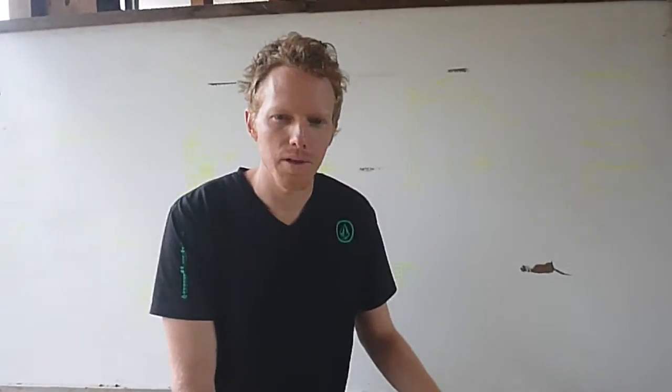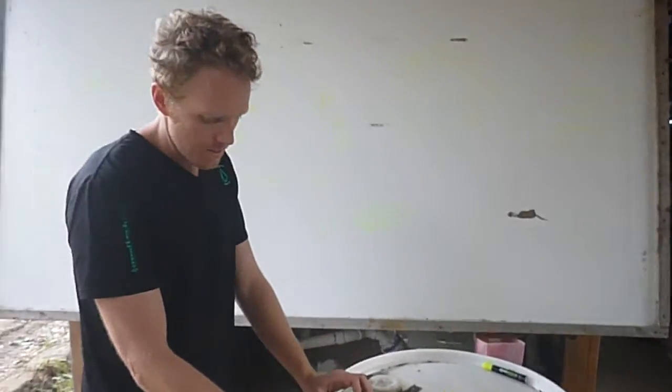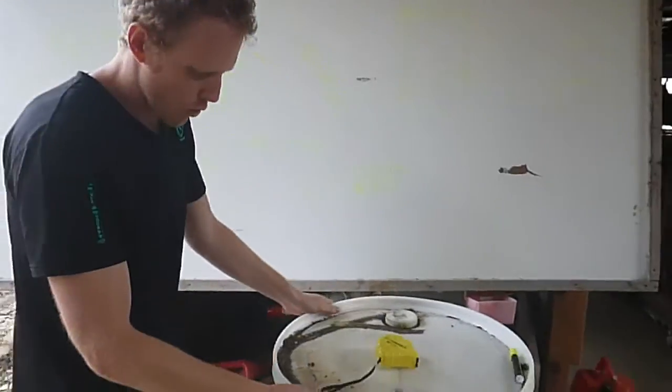Alright, so this is going to be our spirulina production system. Essentially we're using this 55 gallon drum as the main culture grow area.